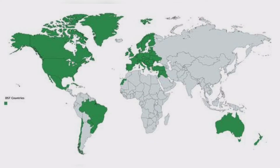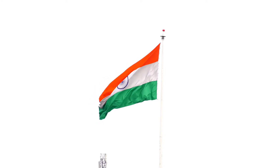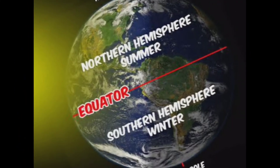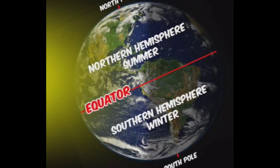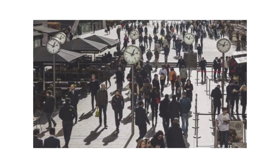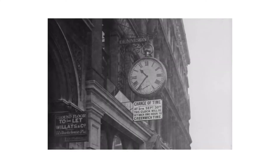Daylight saving time is currently in practice in some 70 countries, including those in the European Union. India does not follow daylight saving time, as countries near the equator do not experience high variations in daytime hours between seasons. As the spring-to-fall cycle is opposite in the northern and southern hemispheres, daylight saving time lasts from March to October or November in Europe and the US, and from September or October to April in New Zealand and Australia.